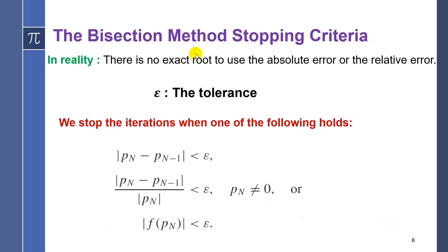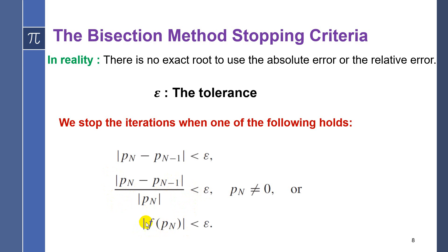The bisection method stopping criteria: in practice, we don't have an exact value to use for absolute or relative error, so how do we stop our iterations? If ε is the tolerance, we stop when one of the following holds: (1) |pn - pn-1| < ε, (2) |pn - pn-1| / |pn| < ε, or (3) |f(pn)| < ε. These are the criteria to stop the bisection method.